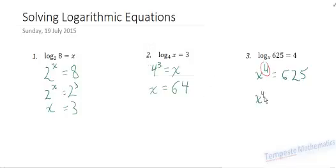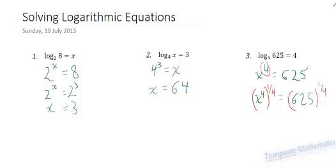So, x to the 4. And then, we're going to raise that to the power of 1 over 4. What I do to the left-hand side, I have to do to the right. So, 625 raised to the power of 1 over 4. x is equal to, and another way of writing this, is the 4th root of 625.